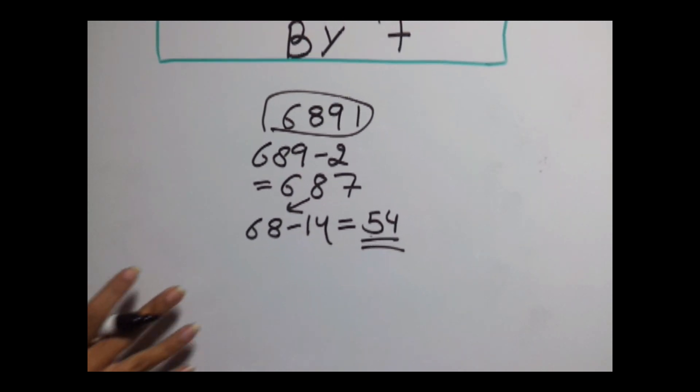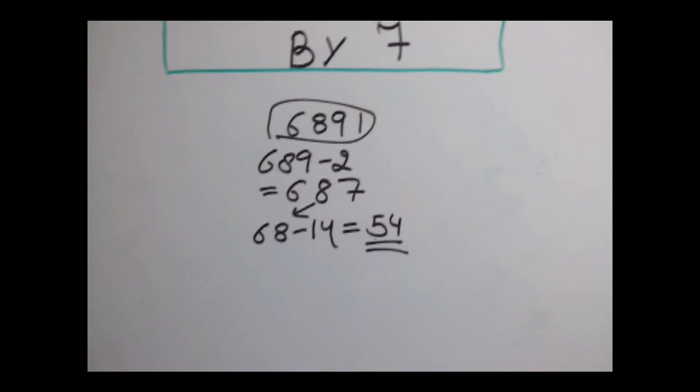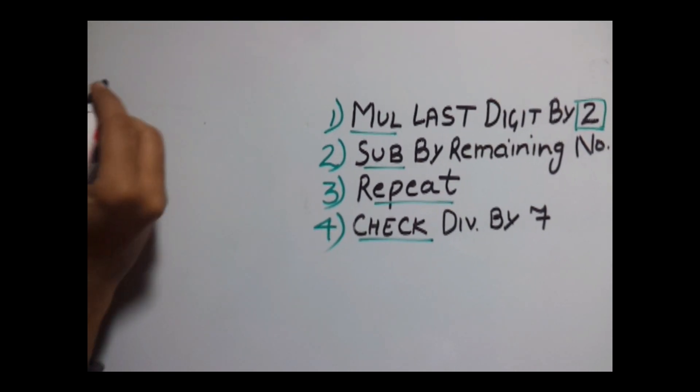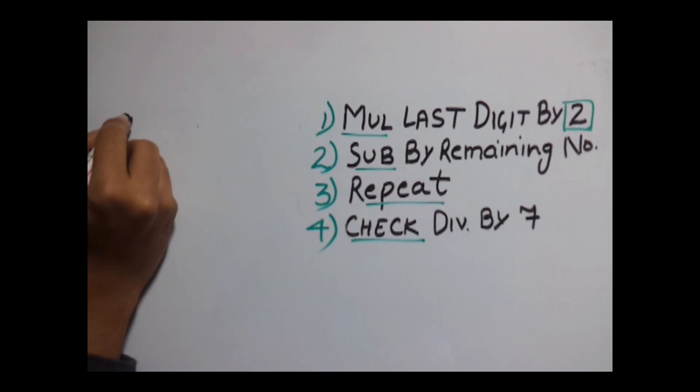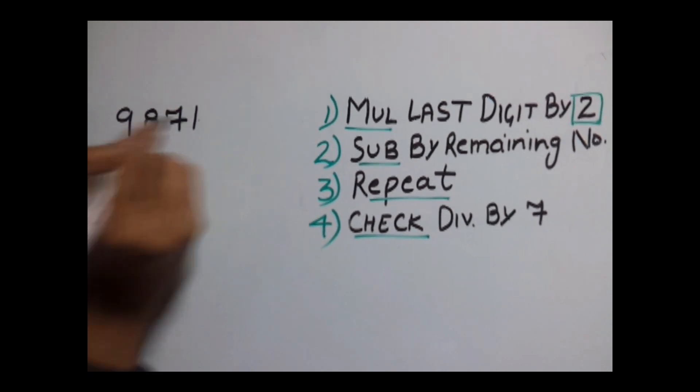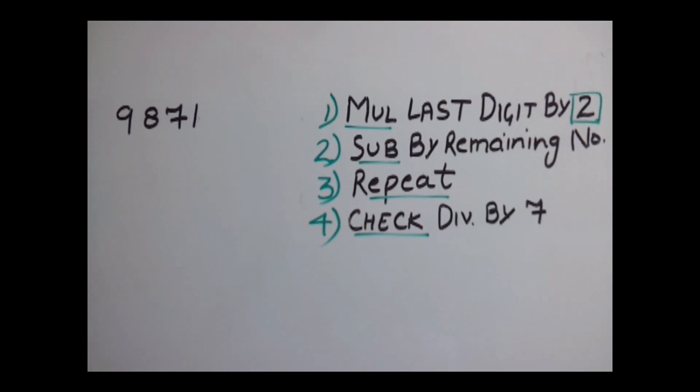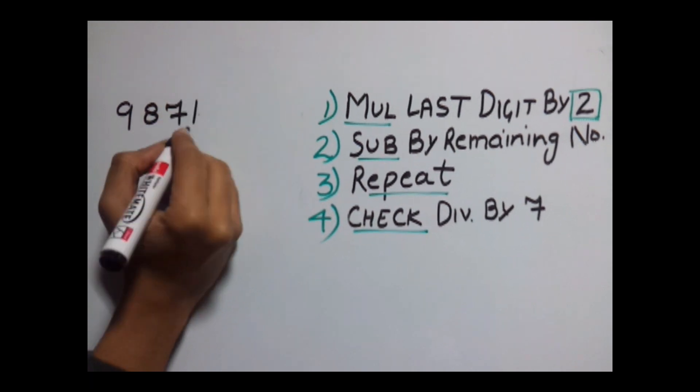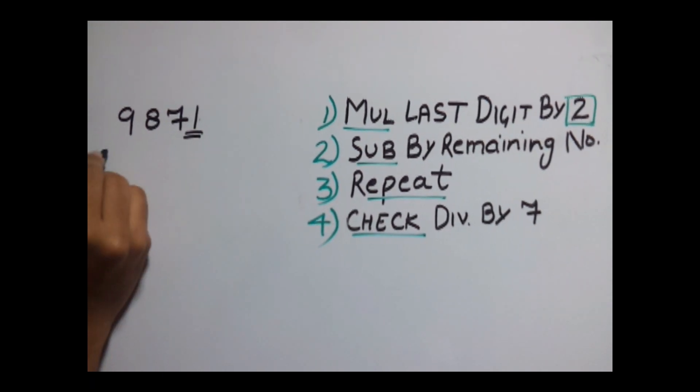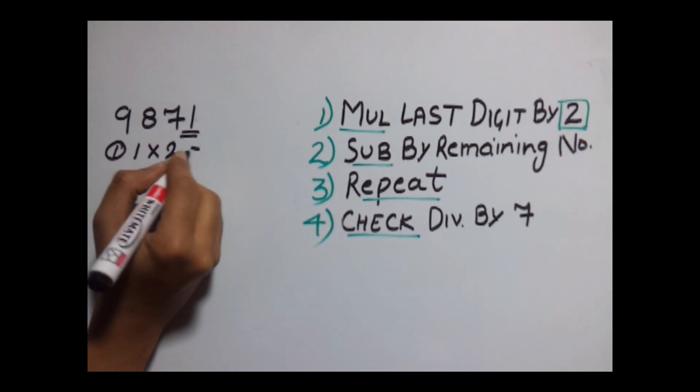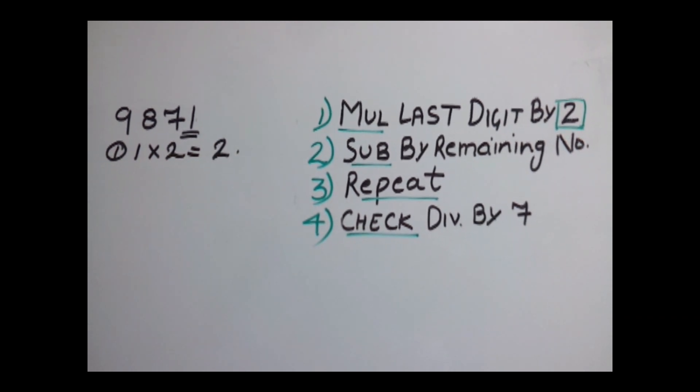Let's tell you in a more elaborate way. Let's see how we can do this quickly. Let's take an example: 9871. Our first step is to multiply the last digit by 2. Our last digit is 1. So our first step would be 1 into 2, which gives us 2 as our answer.